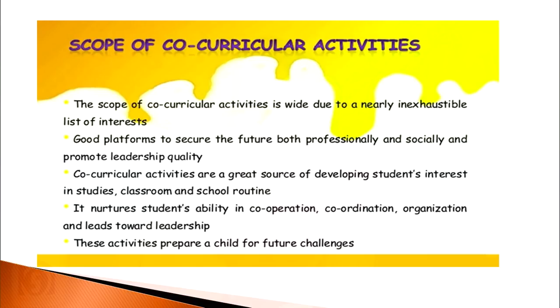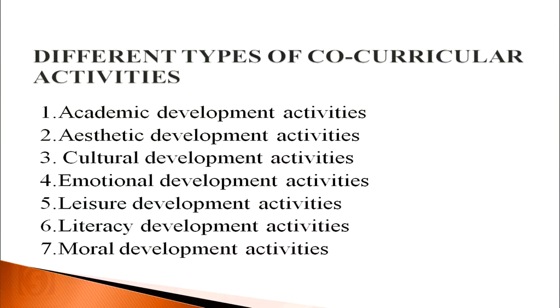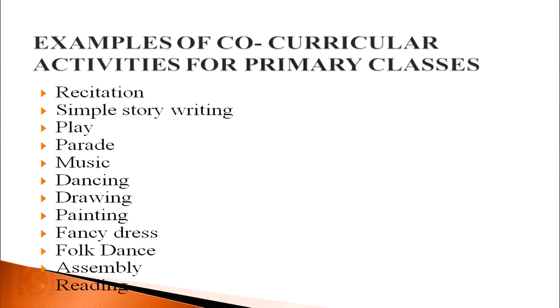These activities prepare a child for future challenges. There can be seven different types of co-curricular activities: academic development activities, aesthetic development activities, cultural development activities, emotional development activities, leisure development activities, literacy development activities, and moral development activities. For primary classes, examples include recitation, simple story writing, play, print, music, dancing, drawing, painting, fancy dress, folk dance, assembly and reading.